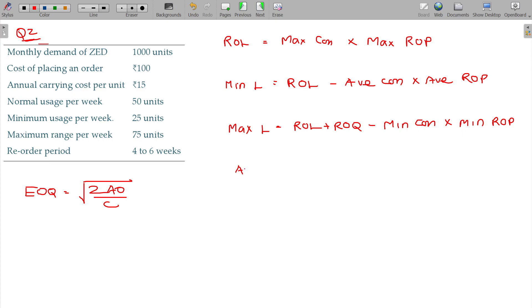Average level is equivalent to minimum level plus maximum level by 2, or minimum level plus half of reorder quantity.